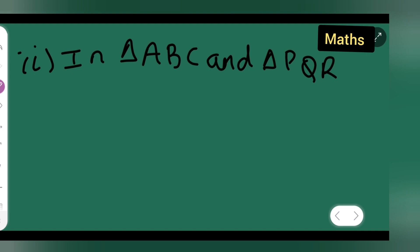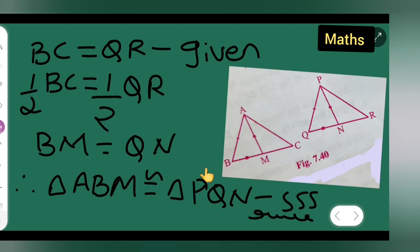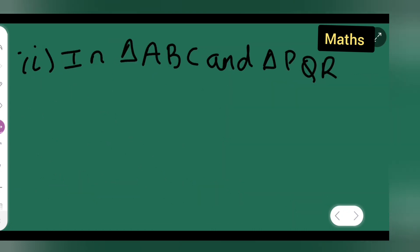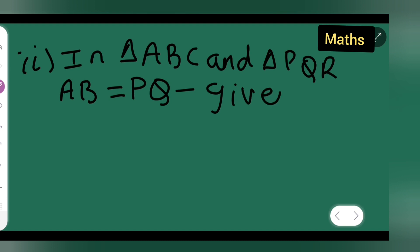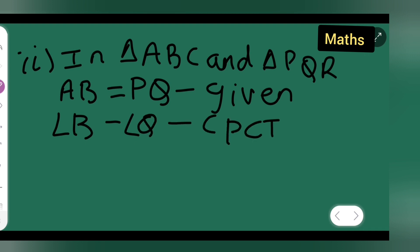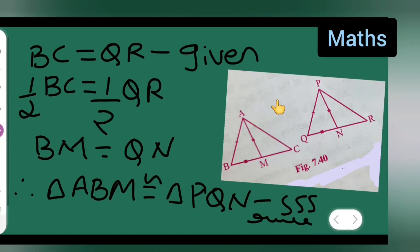In triangle ABC and triangle PQR, first: AB = PQ, which is given. Next, angle B = angle Q. This comes from the corresponding parts of the congruent triangles we proved in Part 1 — specifically, angle B = angle Q by CPCT.